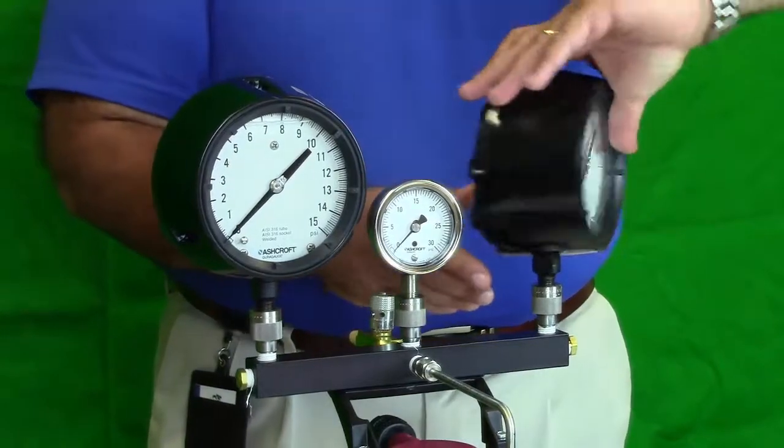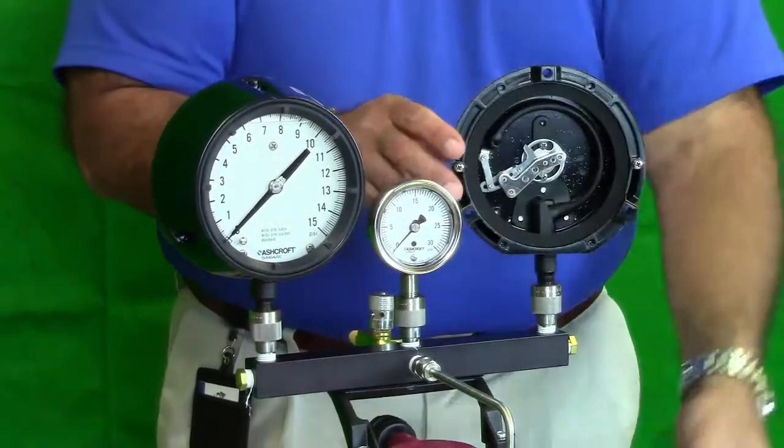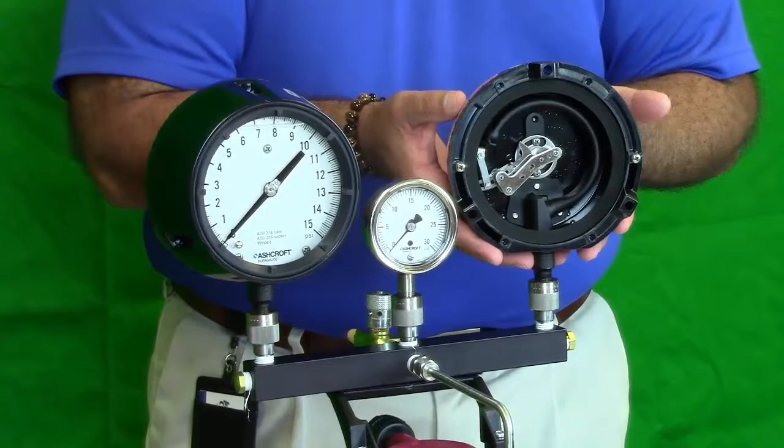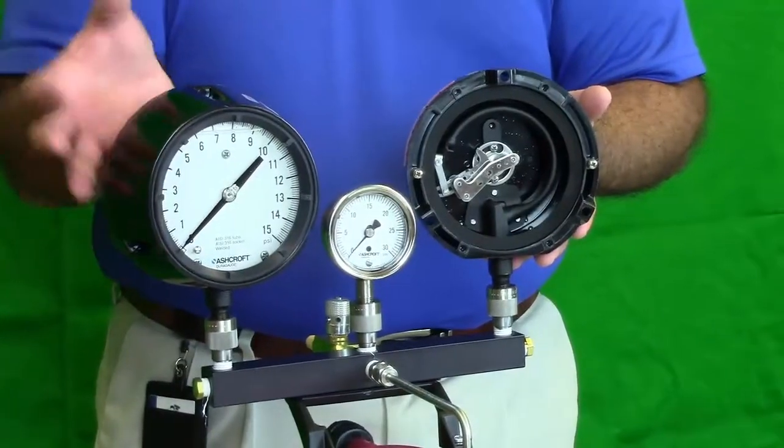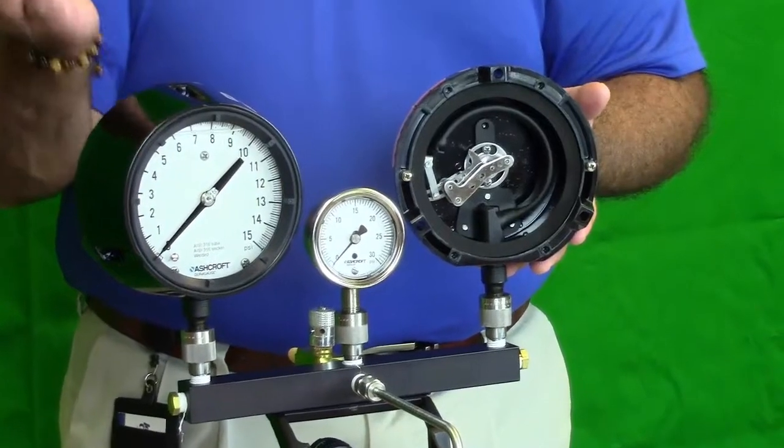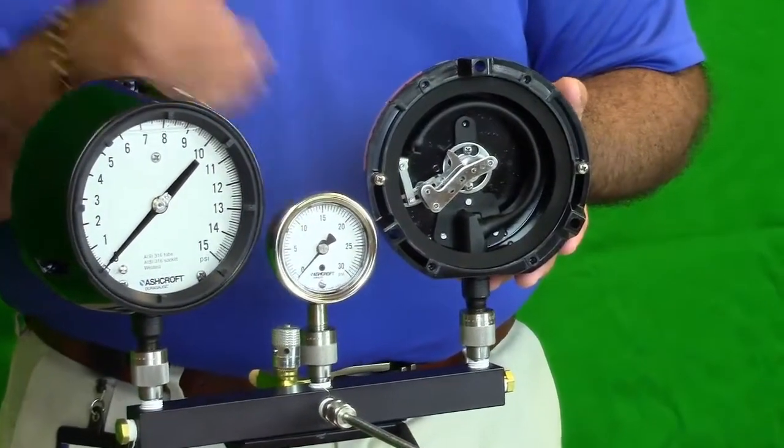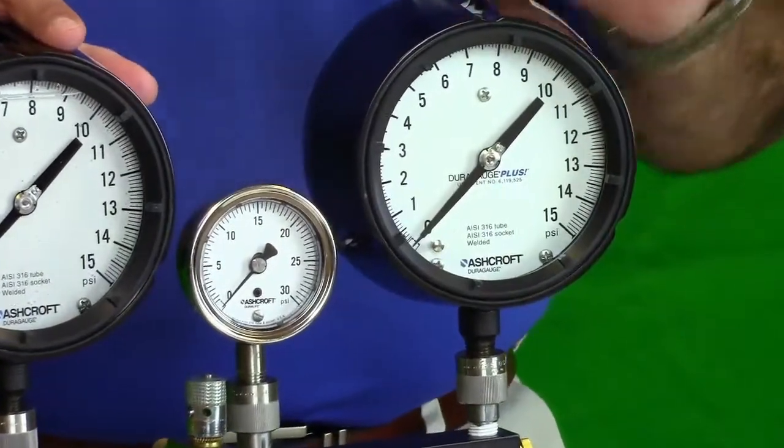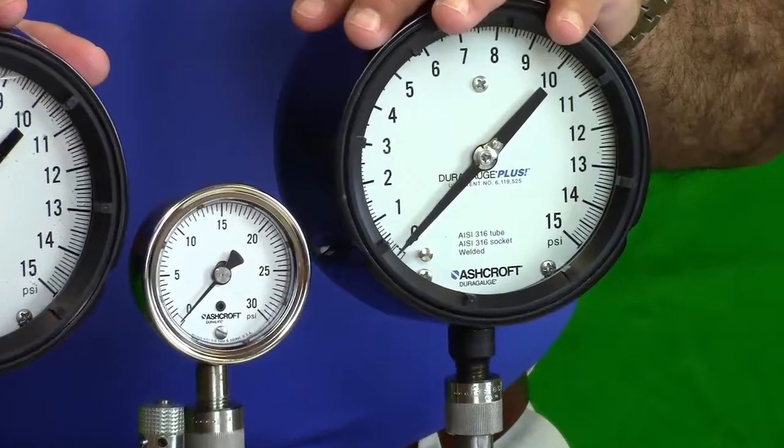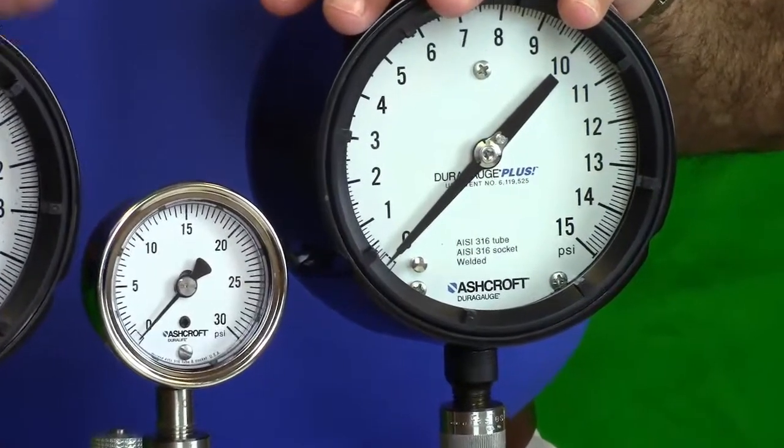The interesting thing is if I turn the Plus gauge around and show you, there's nothing inside. It's completely empty, and it's very light as in comparison to a liquid gauge that has weight to it. So there are soft costs in terms of inventory and shipping costs that you'll also save. Besides not having to worry about stocking various fills for applications, this will handle just about everything that you can run through a liquid gauge.